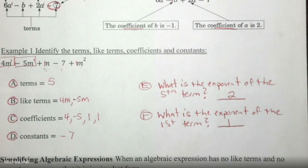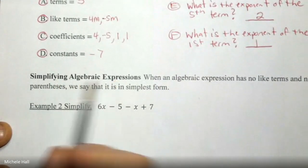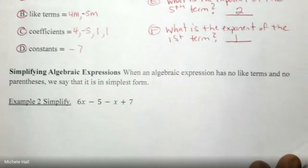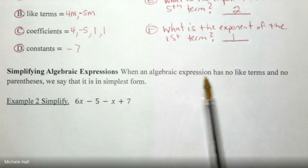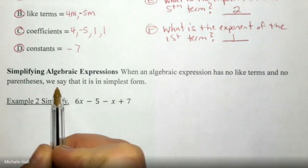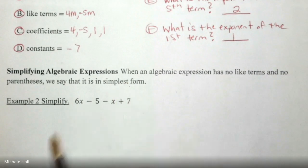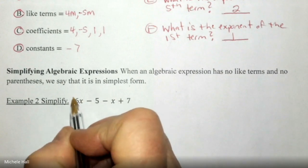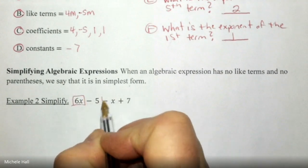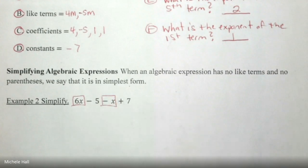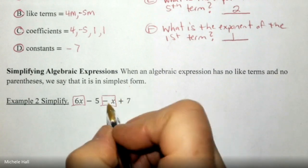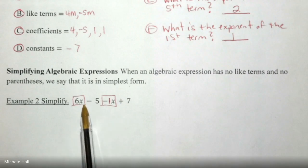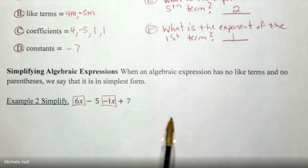Two more examples and then you can start your homework. We need to simplify algebraic expressions. When an algebraic expression has no like terms and no parentheses, we say that it's in simplest form. We don't have any parentheses. Do we have any like terms? I see 6x and I see negative x. What is the coefficient of negative x? Put that one in there. So I have 6x minus 1x. That would be 5x.